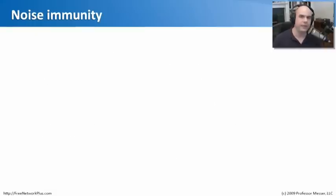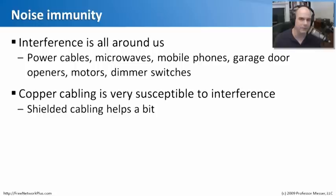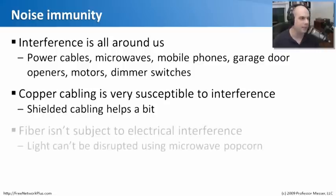Whenever you're designing your network, one thing to keep in mind is how noisy the environment is — and I mean noisy in terms of electrical signals around you. Almost everything we do these days has some type of electrical interference: mobile phones, microwave ovens, garage doors, and elevators with their big motors can all create interference on our networks. If you're putting copper cabling in, you need to either avoid the interference — you don't want to drape a copper cable over a fluorescent light — or put shielding in the cable to make it less susceptible to that type of noise.